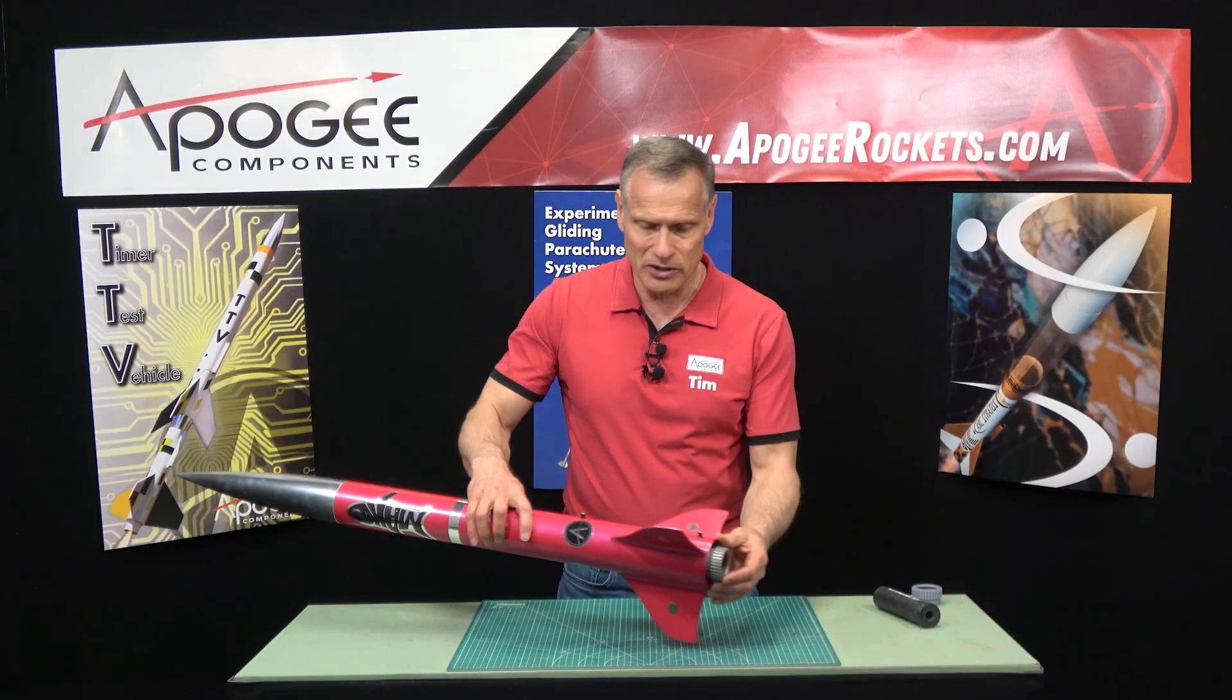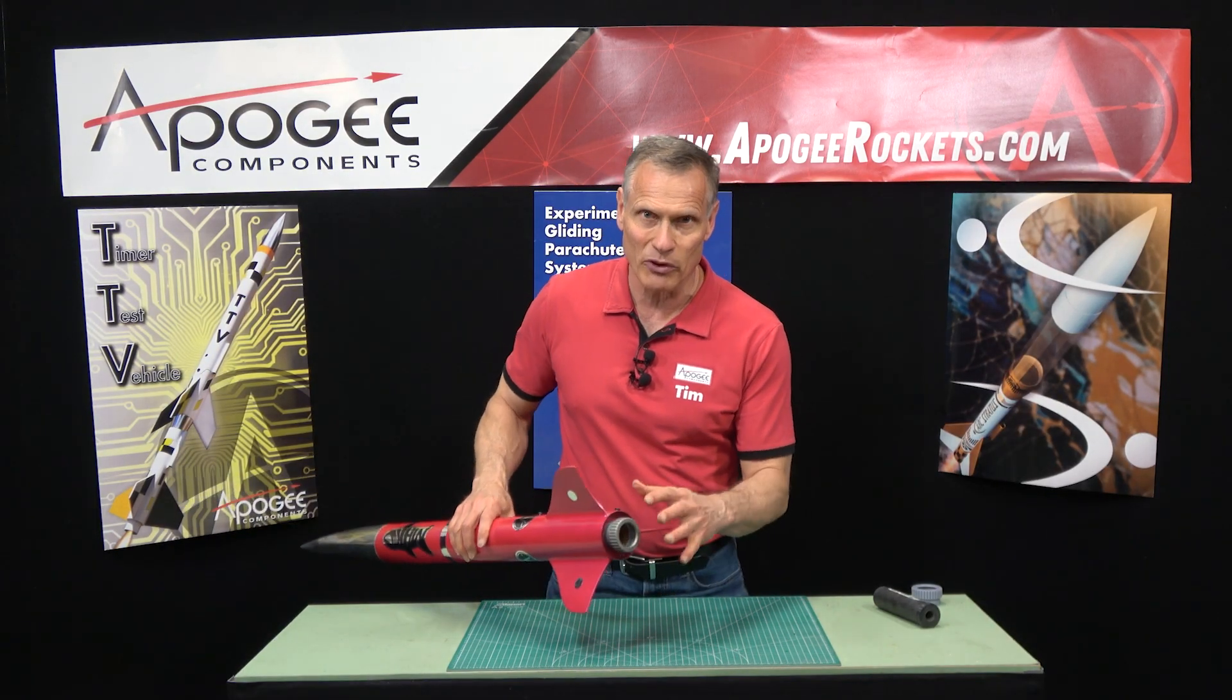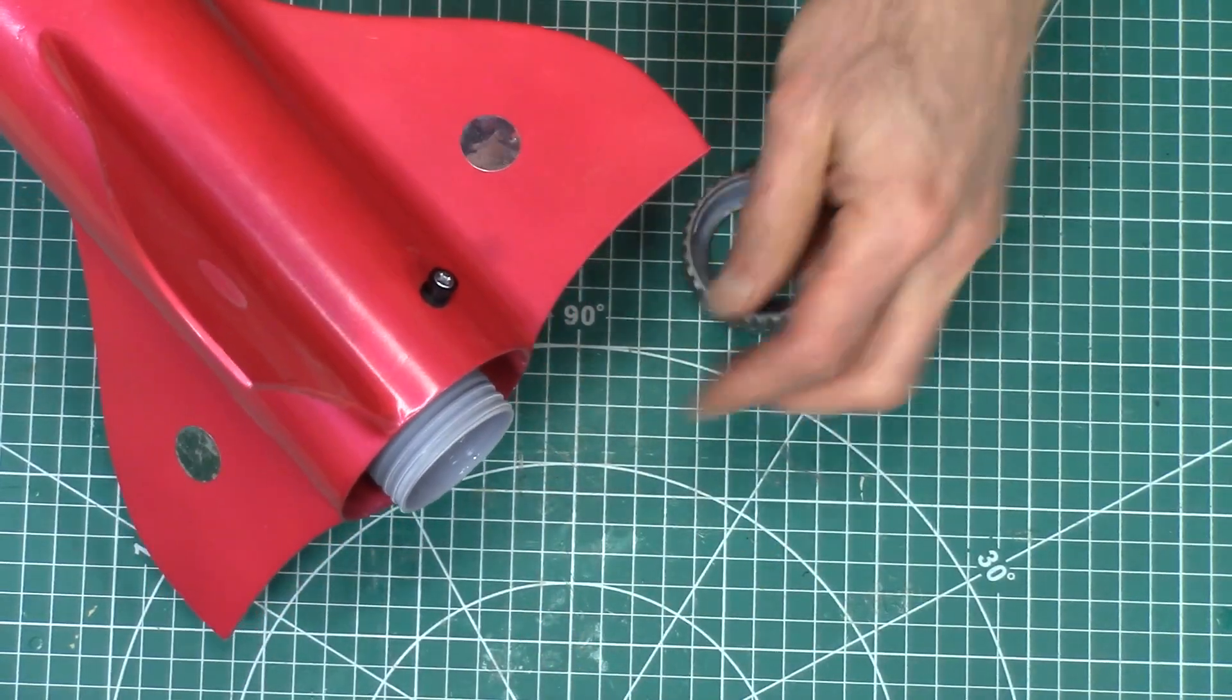This rocket right here is the Apogee Mako and we put in a 38 millimeter engine mount as an alternative.